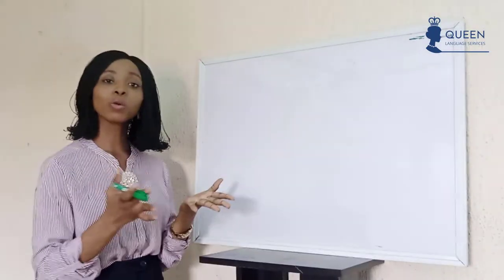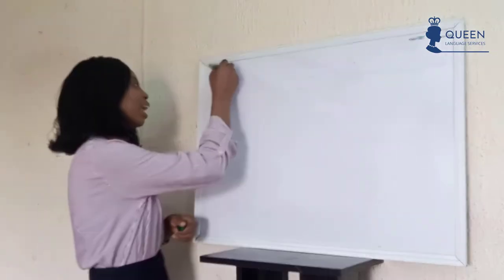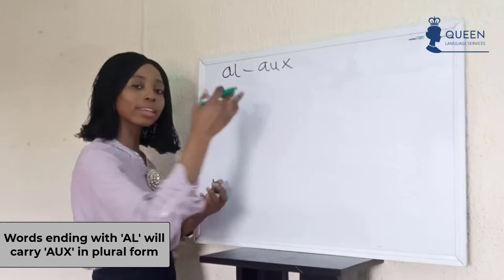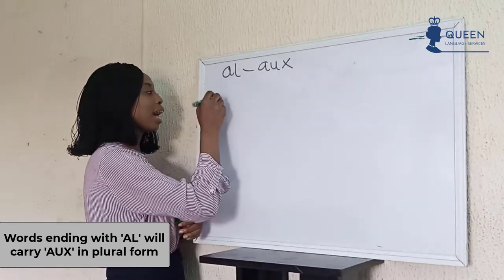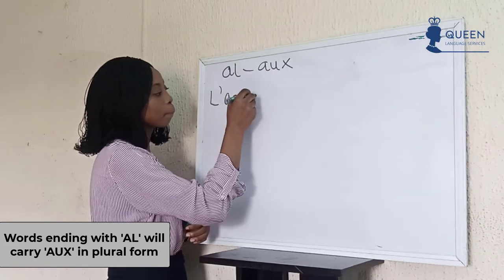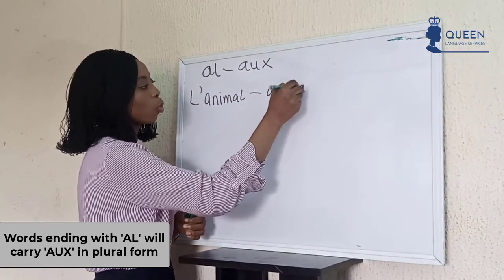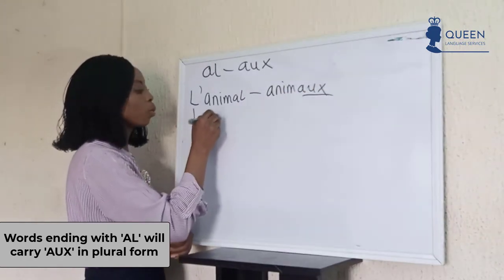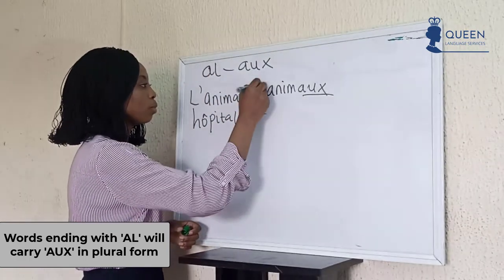We have words ending with -al in the singular form, and in the plural form we have it as -aux. For example, we have 'animal' — in the plural form it gives us 'animaux.' We have 'hôpital' — and the plural gives us 'hôpitaux.'